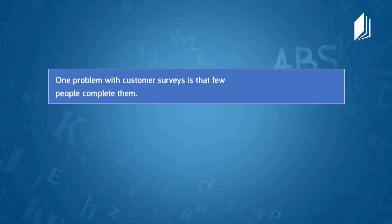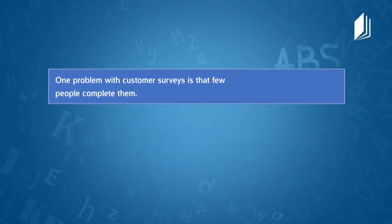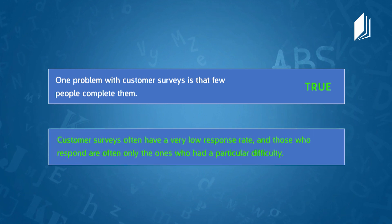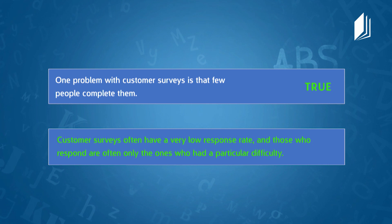Now let's do a true or false exercise based on the text. First statement: 'One problem with customer surveys is that few people will complete them.' The answer is true — we read that customer surveys often have a very low response rate and those who respond are often only ones who had a particular difficulty. So the previous system was not reliable — that's why they use mystery shoppers.